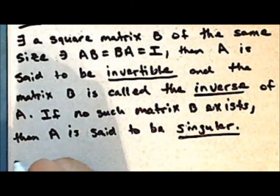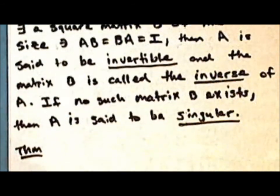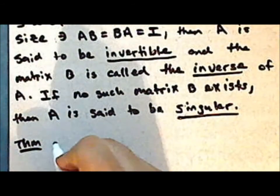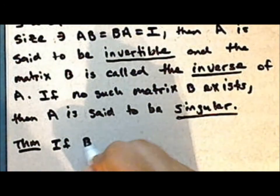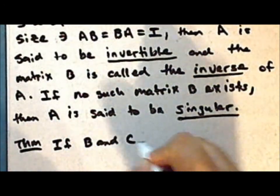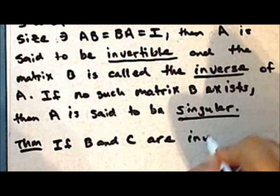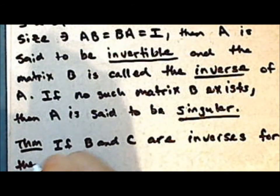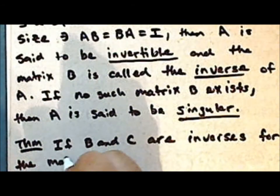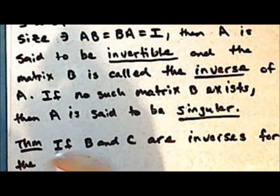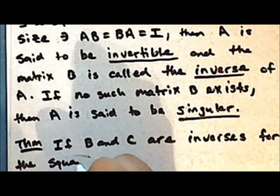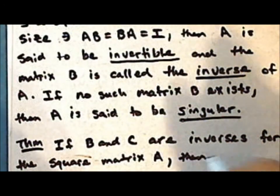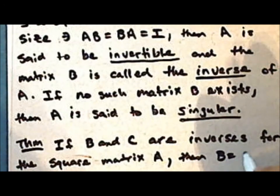Next we'll show that if a matrix has an inverse, then that inverse is unique. So if B and C are both inverses of the square matrix A, then necessarily B and C are the same matrix.